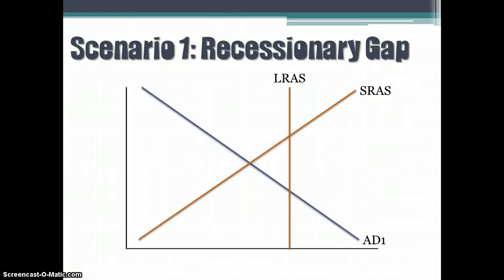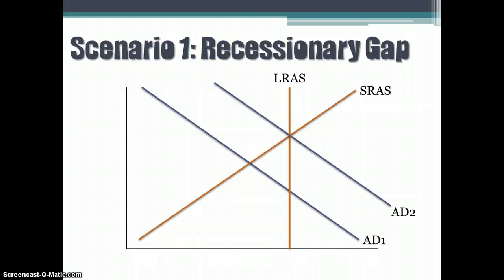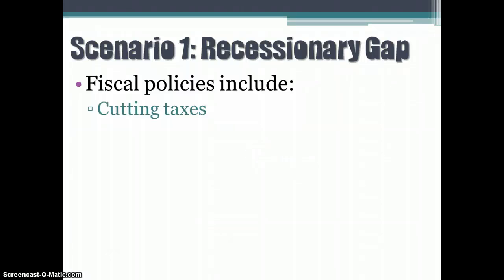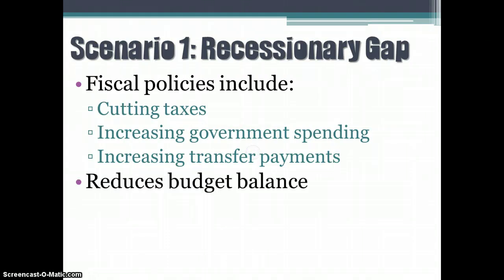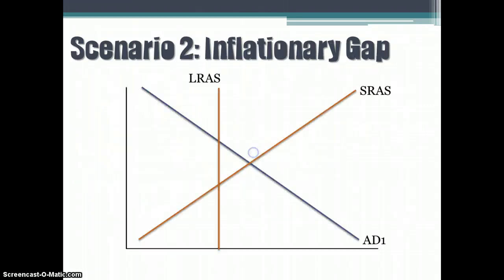If we're in a gap like this, we have a couple of things we can do that will move the aggregate demand curve to the right and get us to equilibrium in the long run — things like cutting taxes, increasing government spending, and increasing transfer payments. But when we do that, it clearly has an impact on our budget balance. It moves us more towards a deficit as we shift aggregate demand to the right.